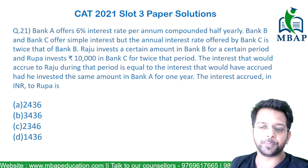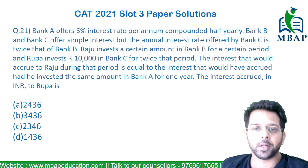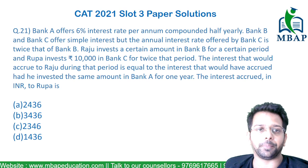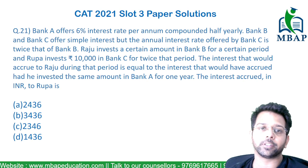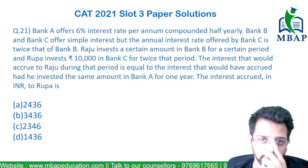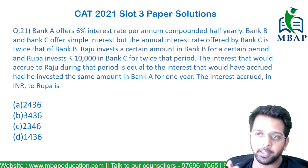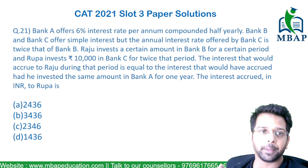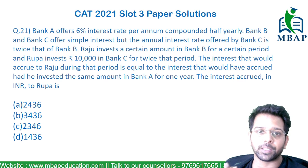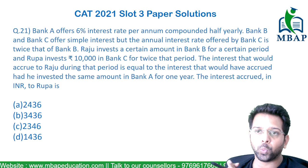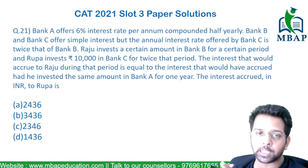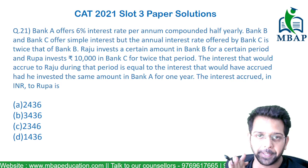Let's take the next question. Bank A offers 6% interest per annum compounded half yearly. Bank B and C offer simple interest, but the annual interest offered by C is twice that of B.